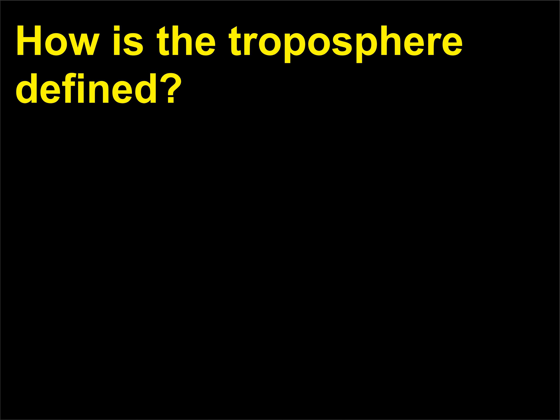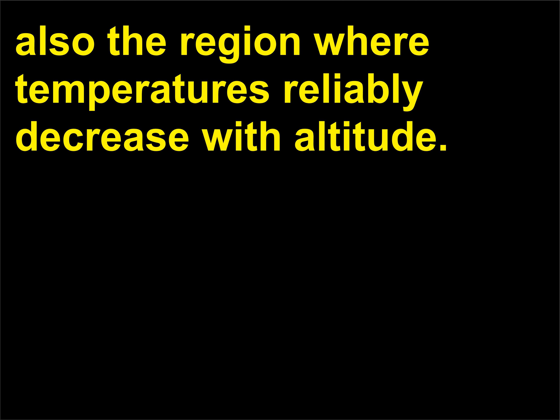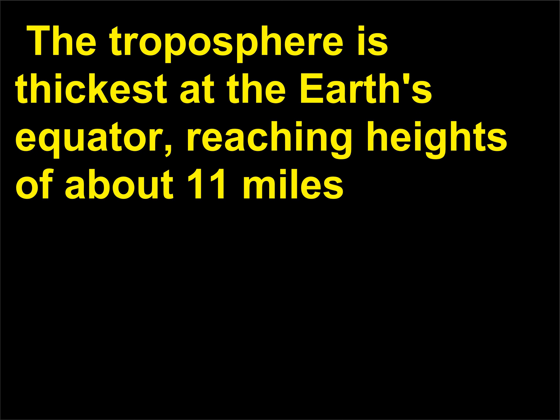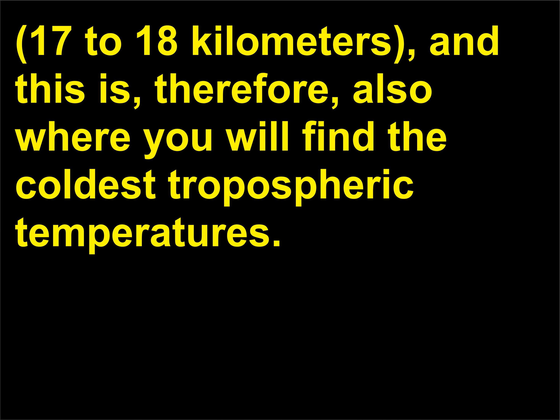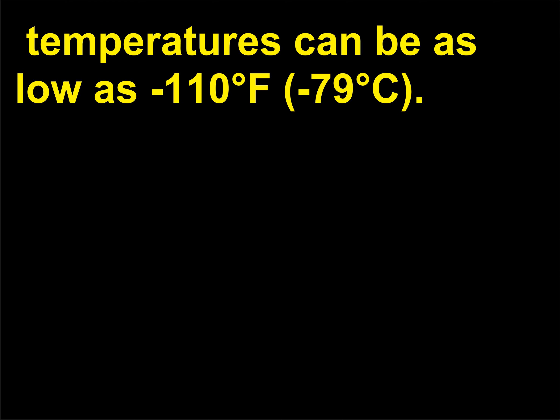How is the troposphere defined? The troposphere is considered the layer closest to Earth and is also the region where temperatures reliably decrease with altitude. The troposphere is thickest at the Earth's equator, reaching heights of about 11 miles (17 to 18 kilometers), and this is therefore also where you will find the coldest tropospheric temperatures. It might seem rather ironic that right above the world's steamiest tropical forests, temperatures can be as low as minus 110 degrees Fahrenheit (minus 79 degrees Celsius).